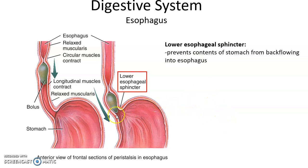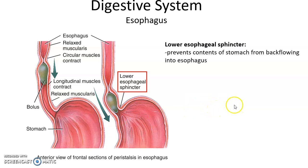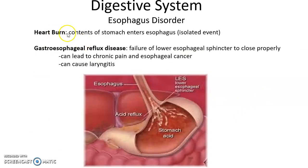At the end of the esophagus, or the beginning of the stomach, is the lower esophageal sphincter. The lower esophageal sphincter prevents the contents of the stomach from backing up into the esophagus. When the sphincter doesn't function properly, you can experience heartburn — when the acid from the stomach goes up into the esophagus and causes discomfort.